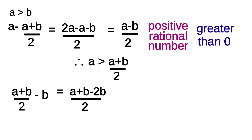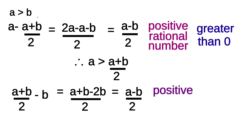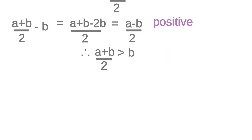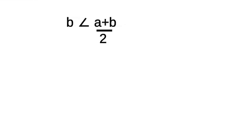Now let's find (a + b)/2 minus b, which equals (a + b - 2b) / 2, giving (a - b) / 2. This is positive because a is greater than b. Therefore (a + b) / 2 is greater than b. On the number line, b is less than (a + b) / 2, and (a + b) / 2 is less than a.